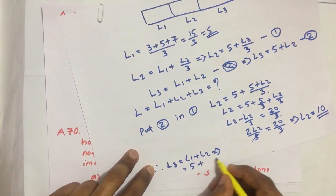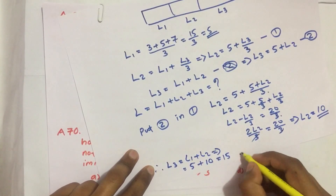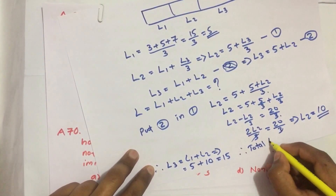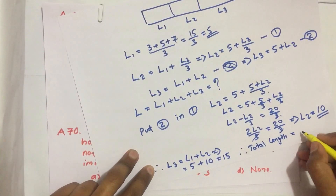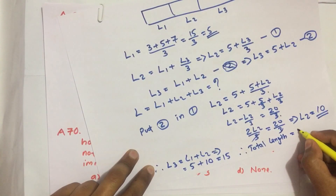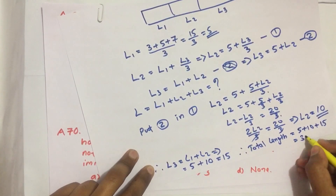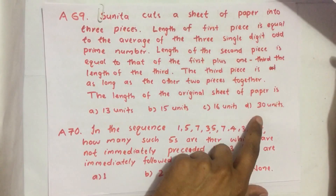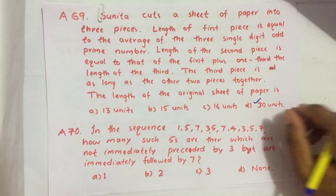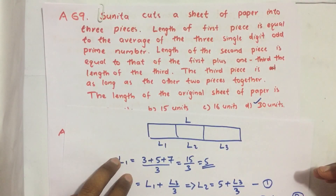Therefore L2 = 10, and L3 = L1 + L2 = 5 + 10 = 15. The total length L = L1 + L2 + L3 = 5 + 10 + 15 = 30 units. So our answer is 30 units, option D. If you have any suggestions please comment, don't forget to like, share, and subscribe our channel. Keep supporting and loving us. Jai Hind!